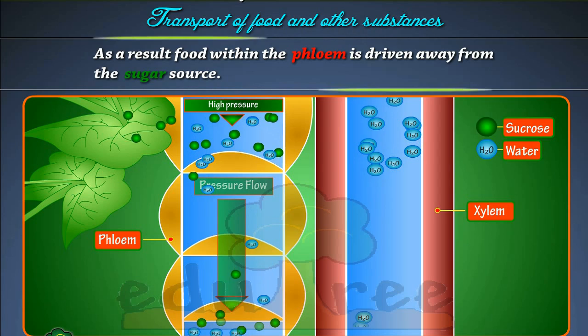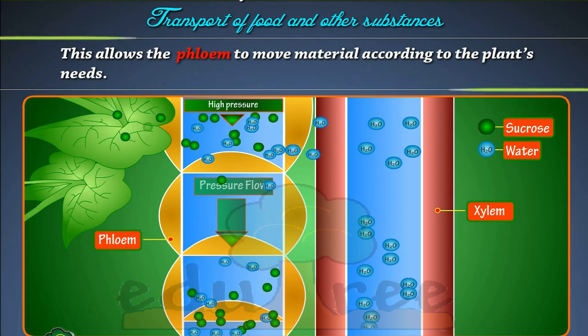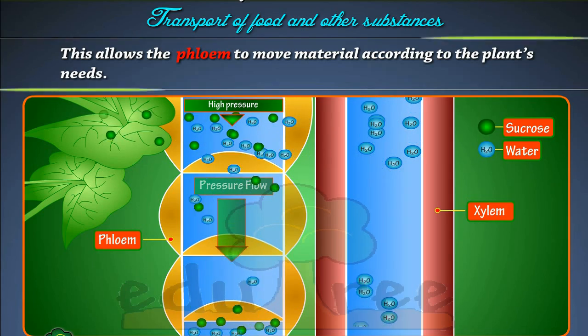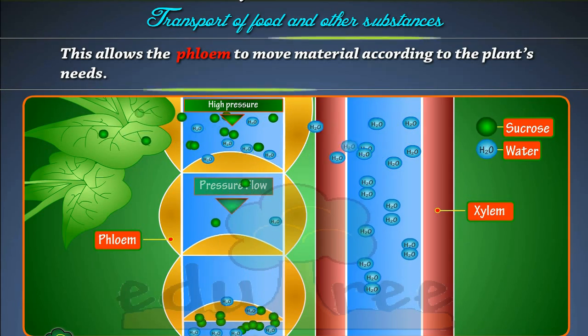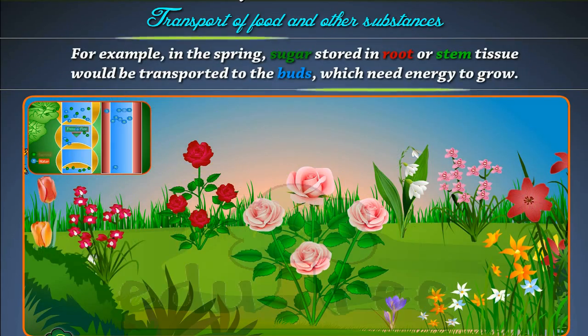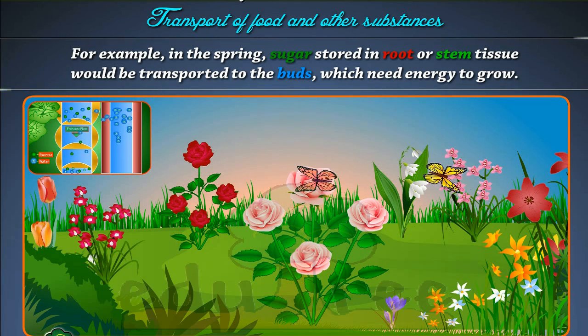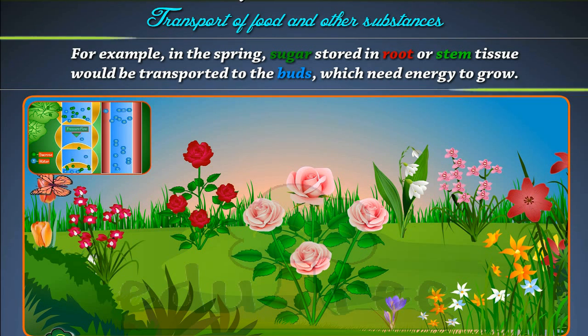source. This allows the phloem to move material according to the plant's needs. For example, in the spring, sugar stored in root or stem tissue would be transported to the buds, which need energy to grow.